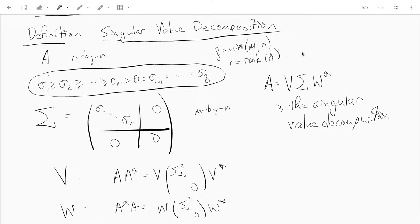And then for the singular value decomposition, it's the factorization of A equals V sigma W star, where V is M by M unitary, W is N by N and also unitary. And sigma is this block matrix with the singular values in the top left and then the rest are zeros. And the dimensions, it has the same dimensions as A.